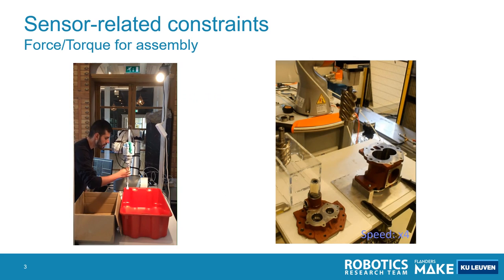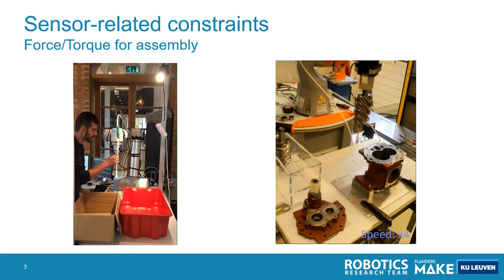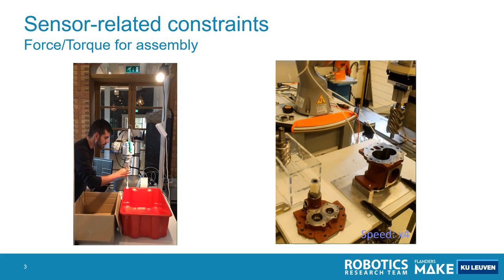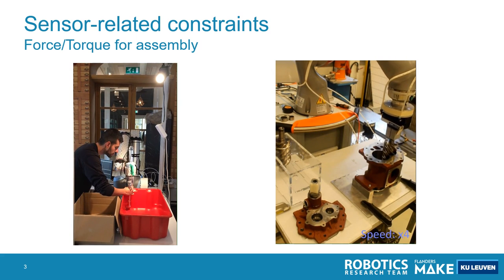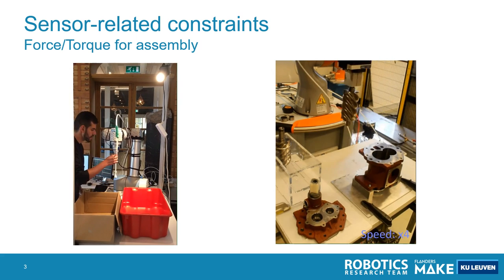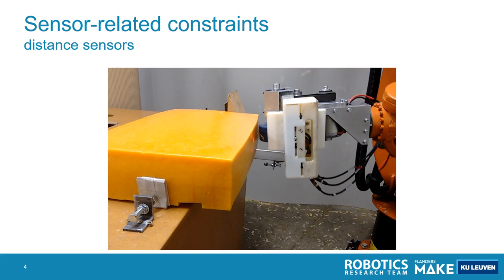Using this admittance control strategy, we can easily implement force-torque control — for example, to kinesthetically teach a robot application, or in the screw compressor assembly case. Also in the cheese application, we use these admittance constraints, for example to control the distance between the tool and the cheese.